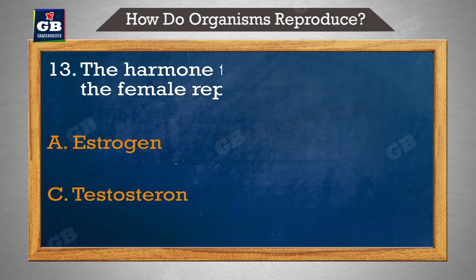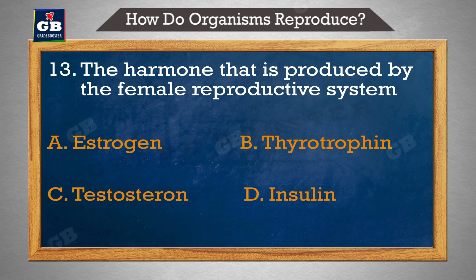The hormone that is produced by the female reproductive system — female reproductive system dwara nirmit hormone. A. Estrogen, B. Thyrotrophin, C. Testosterone, D. Insulin.